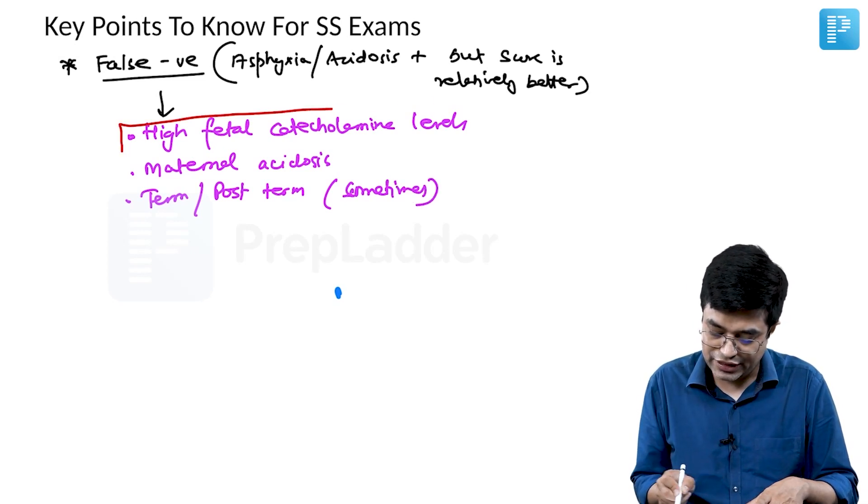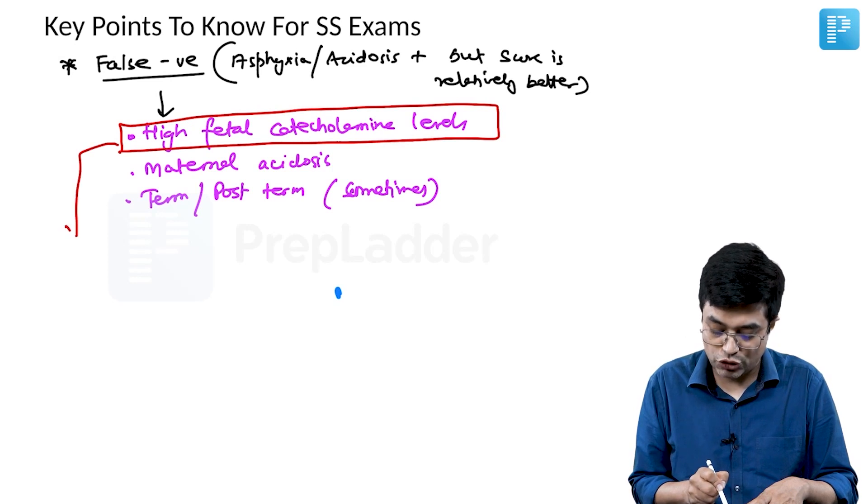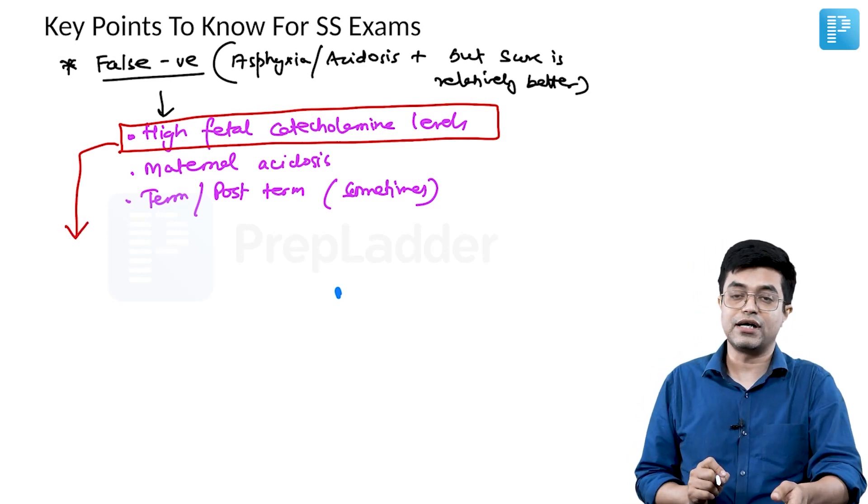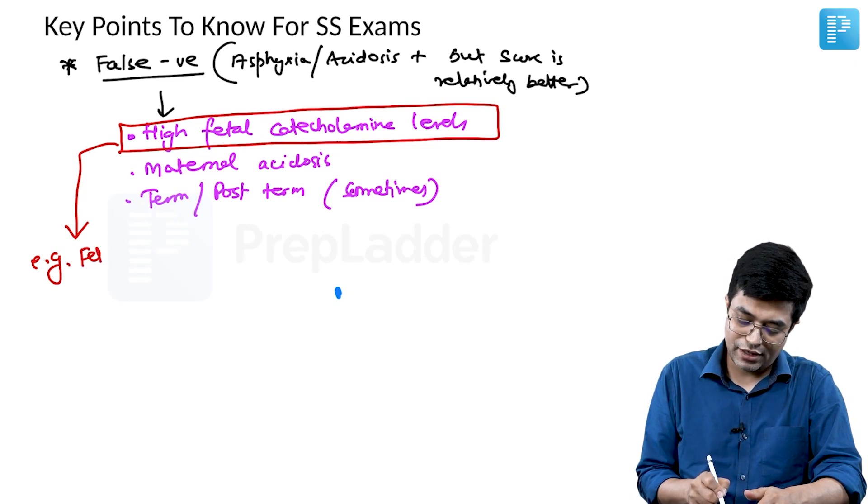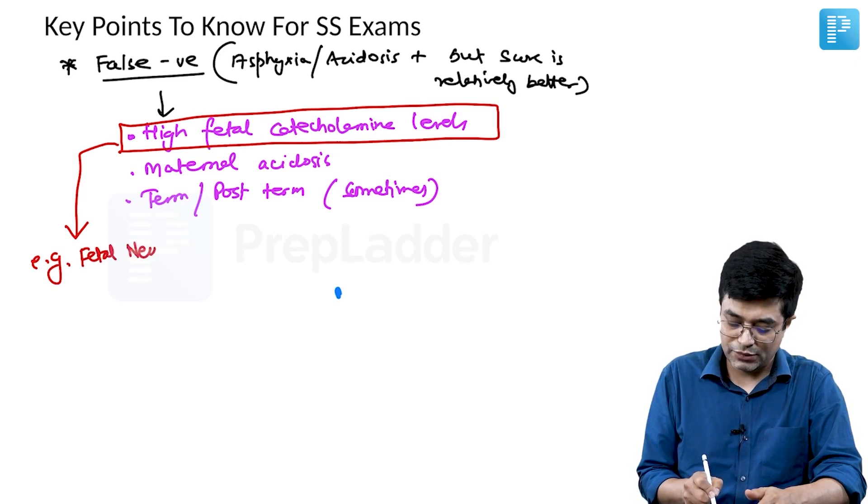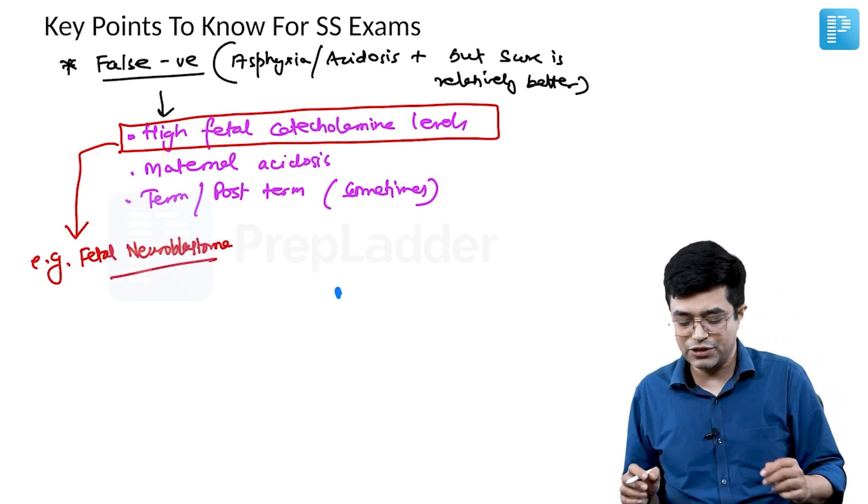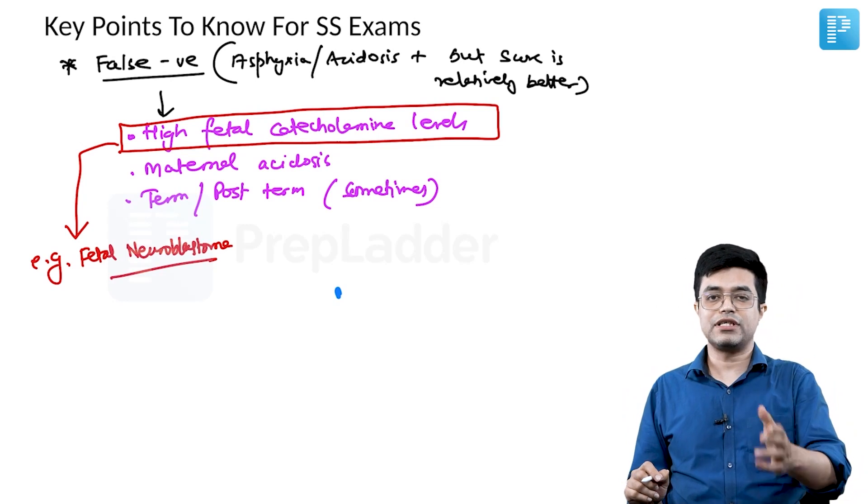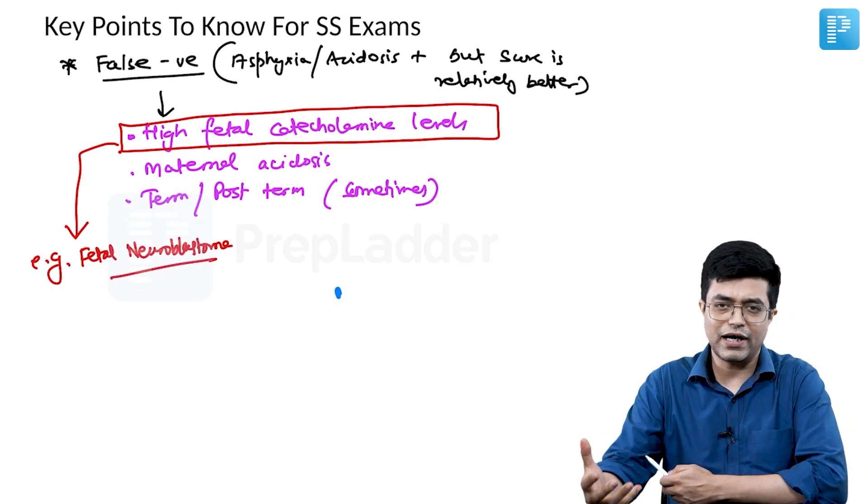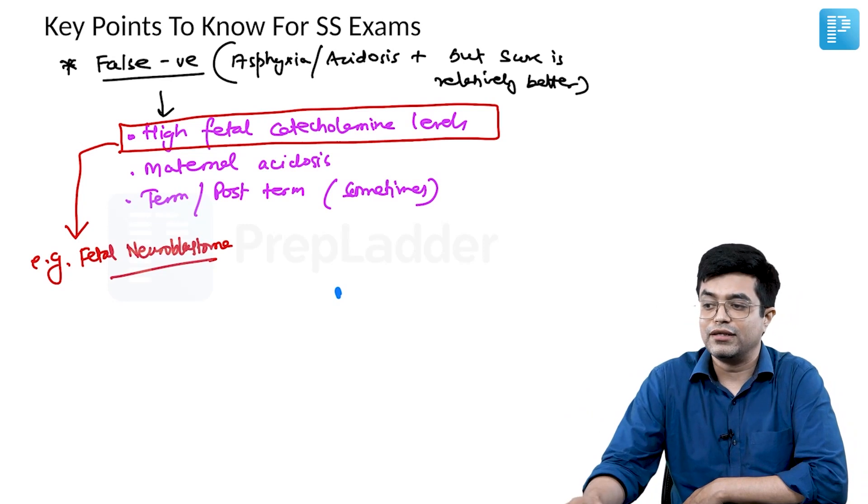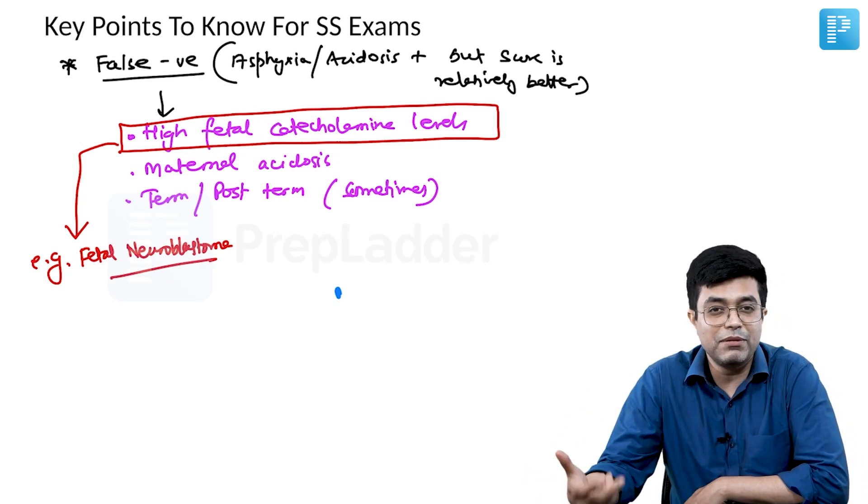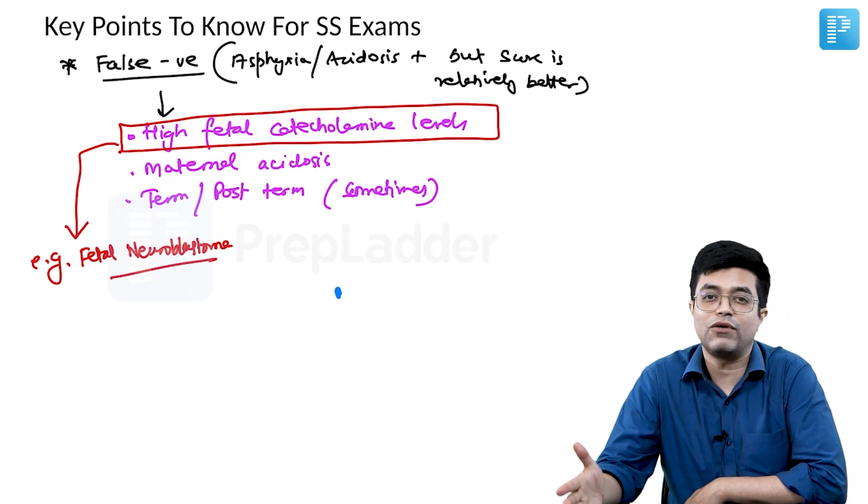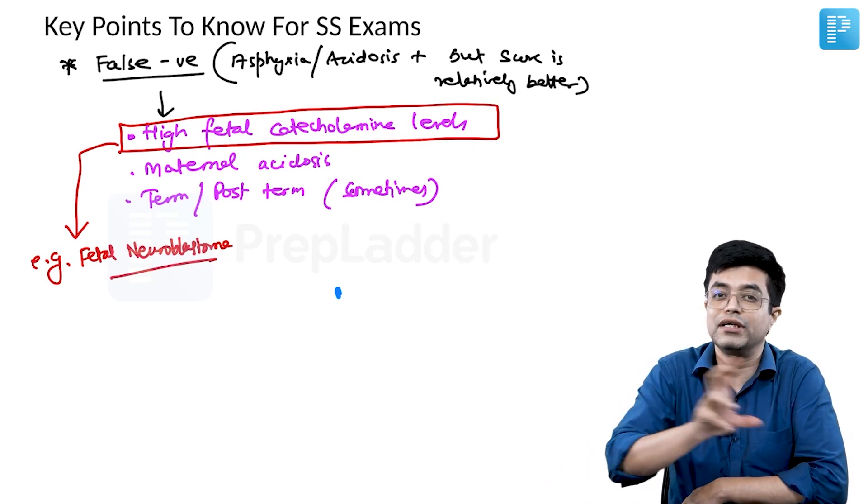Now, you can be asked question, you say high fetal catecholamine levels, you may be asked what is the condition where there is high fetal catecholamine levels. Typical example is a fetal or a neonatal neuroblastoma. If it is an active neuroblastoma which is producing vasoactive substances, there can be a false negative score. That is, because of high epinephrine or norepinephrine and the metabolites, despite asphyxia, the circulation may be good, the extremities may be pink, and so the baby may not have a very low score compared to the degree of asphyxia.